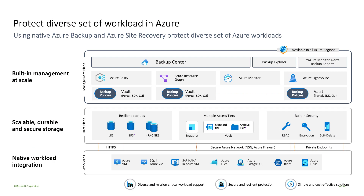Let's see how we protect the diverse set of workloads in Azure. From the bottom up, you can see the native workload integration that we have. Azure today supports a wide variety of workloads, and we are constantly adding new workload support regularly. When we take a backup and move it to the data plane through secure channels, we use private endpoints, NSG (network security groups), and Azure firewalls. Once the data gets moved to the data plane, it gets stored in multiple tiers.